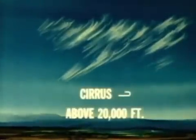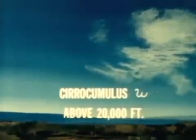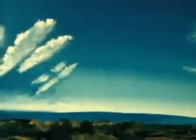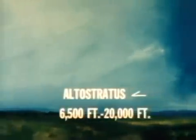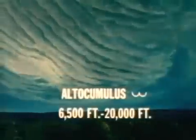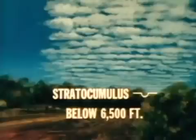Let's review these clouds and altitudes. Cirrus: above 20,000 feet. Cirrocumulus: above 20,000 feet. Cirrostratus: above 20,000 feet. Altostratus: 6,500 to 20,000 feet. Altocumulus: 6,500 to 20,000 feet. Nimbostratus: below 6,500 feet. Stratus: below 6,500 feet. Stratocumulus: below 6,500 feet.